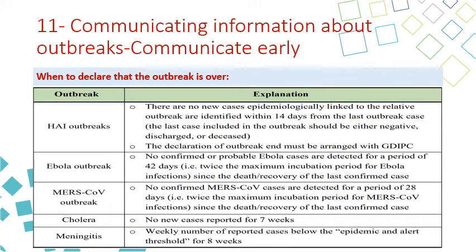Regarding outbreak declaration, this slide explains when to declare that an outbreak is over. For hospital-acquired infection outbreaks, declare the outbreak over when there are no new cases epidemiologically linked to the outbreak within 14 days from the last outbreak case, and the last case included in the outbreak is either negative, discharged, or deceased. The declaration must be arranged with the GD IPC team. For other diseases such as Ebola, MERS, cholera, and meningitis, refer to the outbreak management manual.